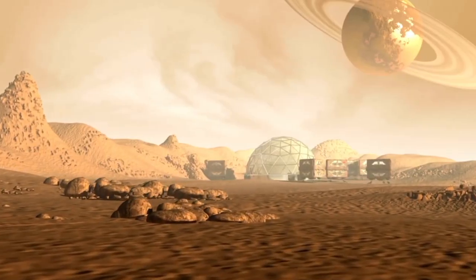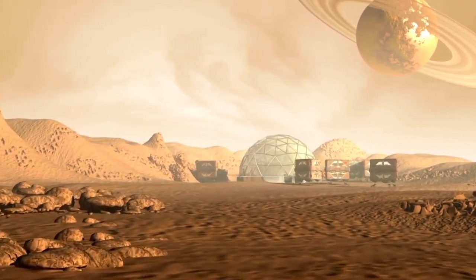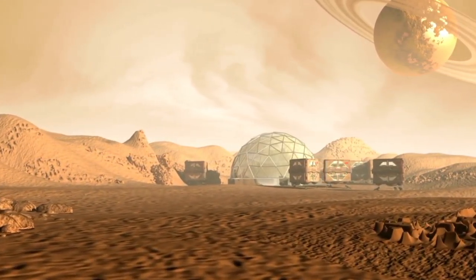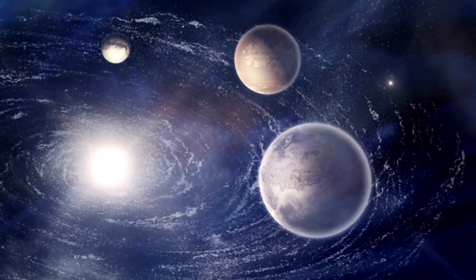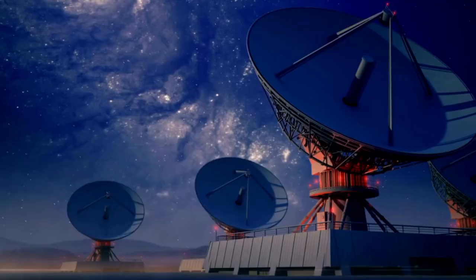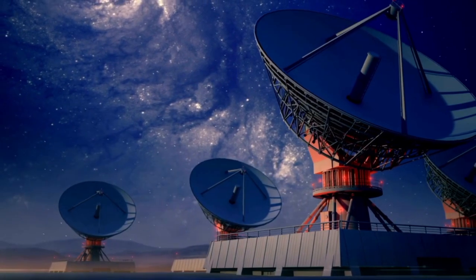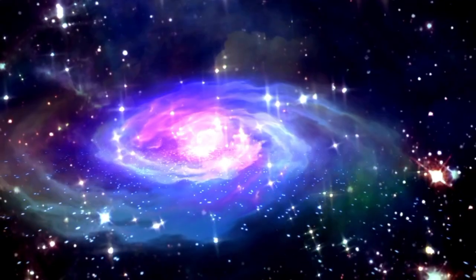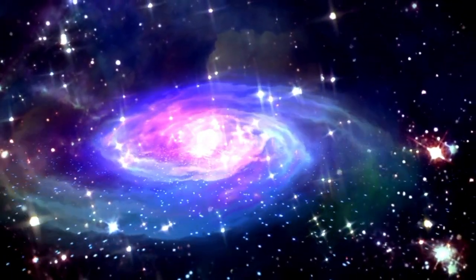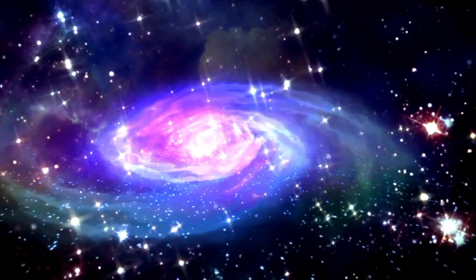One area of focus is the formation of a neutron star, or possibly a black hole, in the remnants of Betelgeuse. A neutron star is the dense core left behind by a massive star after a supernova. These small objects can have more mass than the sun, packed into a volume no larger than a city. If Betelgeuse forms a neutron star, it will provide a unique opportunity to investigate the behavior of matter under extreme conditions.